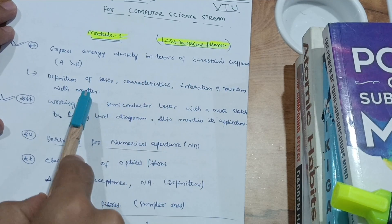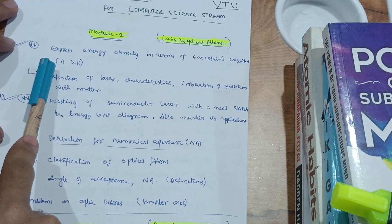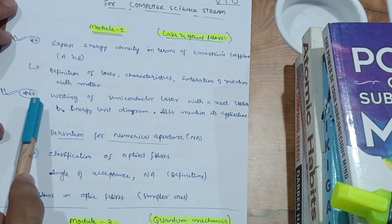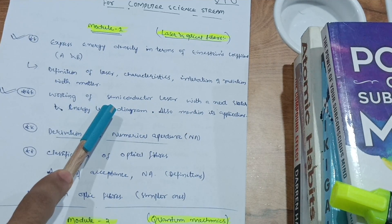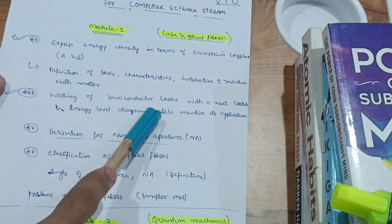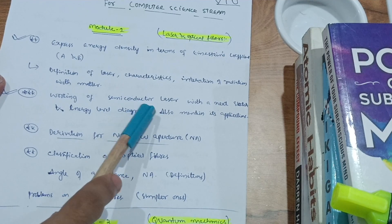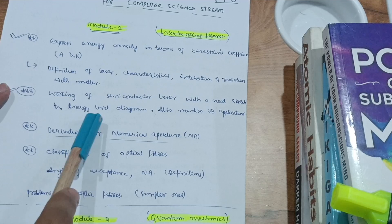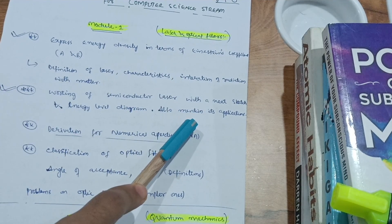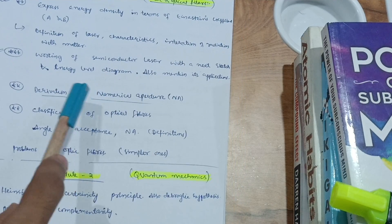You also need to focus on the definition of laser, its characteristics, and the interaction of radiation with matter. However, the most important question — marked with triple star — is the working of the semiconductor laser. In the 2018 scheme there was also the carbon dioxide laser, but that has been deleted. Now it is the semiconductor laser only, to be explained with a neat sketch, energy level diagram, and its applications.